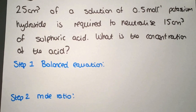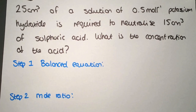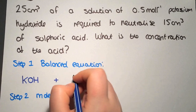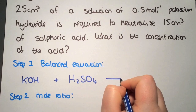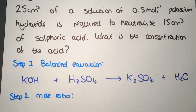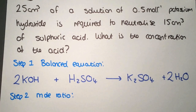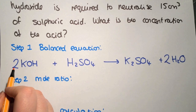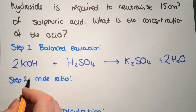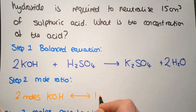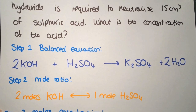Here is another example — this time we're calculating a concentration. Again we start with a balanced equation. We have potassium hydroxide, KOH, plus sulfuric acid, H₂SO₄. That gives us a salt, K₂SO₄, and water. We need to make sure this is balanced, so we have 2KOH and 2H₂O. The mole ratio: we're only concentrating on the reactants — 2 moles of KOH requires 1 mole of H₂SO₄.